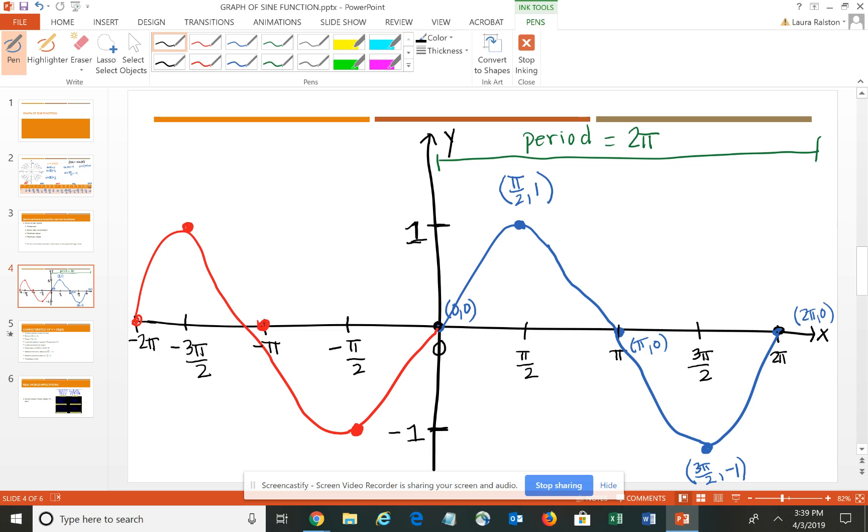The basic shape begins at 0, ends at 0, mids at 0, max is at 1, min is at negative 1, and it goes up, down, and back up again – similar to a roller coaster.